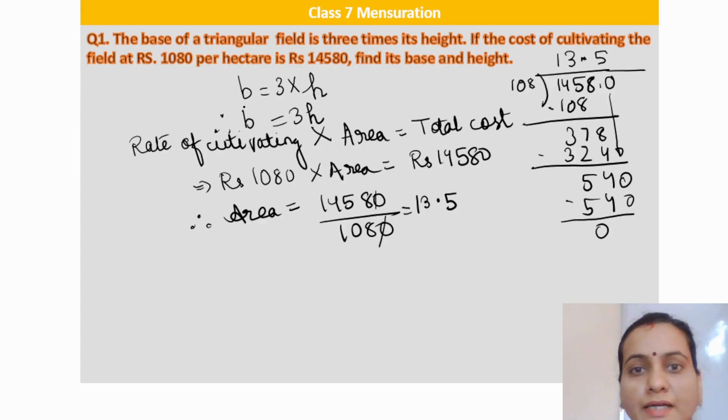So we get 13.5. But it is in hectare terms. Our rate was given in hectare. So we have to change this hectare either into meter square or kilometer square or centimeter square. The standard is meter square. One hectare is equal to 10,000 meters square.